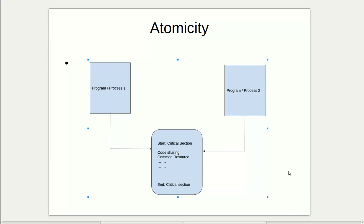In this diagram let's see how the atomic operation works. Here we can see there are two processes, process 1 and process 2.